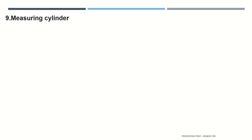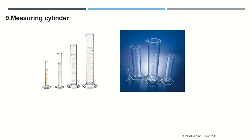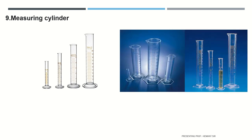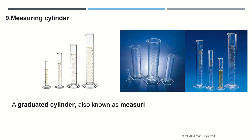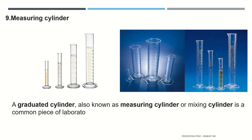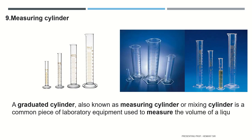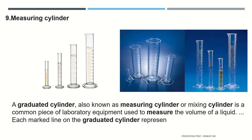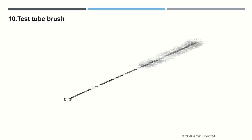The measuring cylinder — also known as a graduated cylinder or mixing cylinder — is a common piece of laboratory equipment used to measure the volume of a liquid. Each marked line on the graduated cylinder represents the amount of liquid that has been measured.